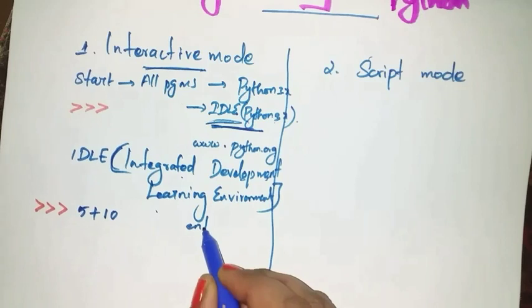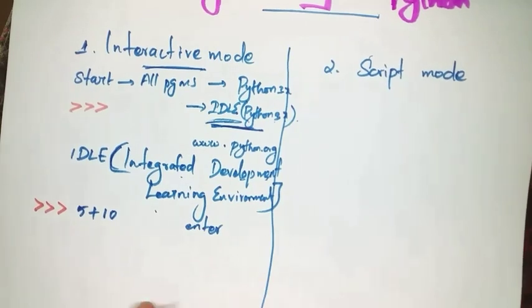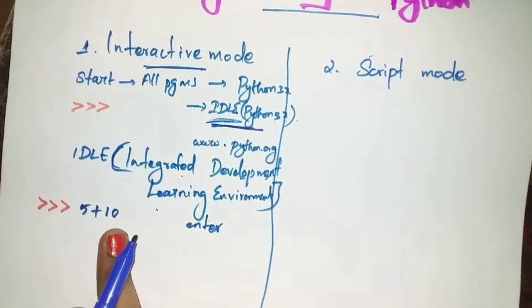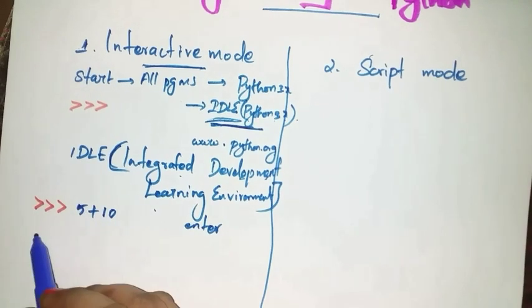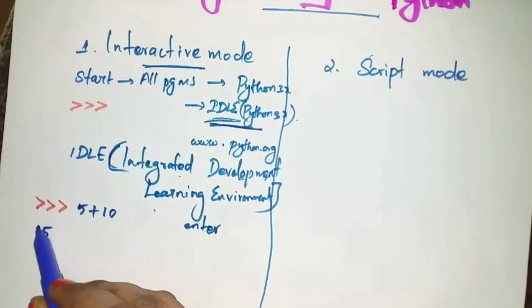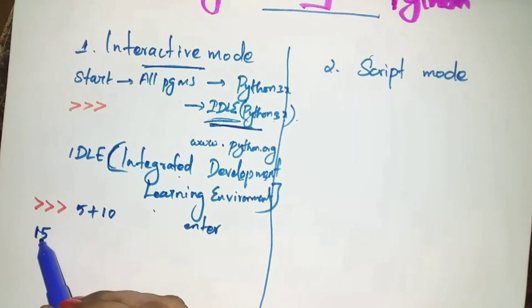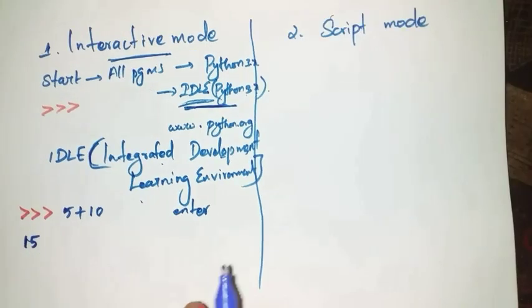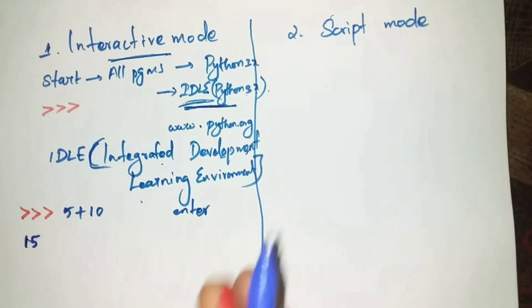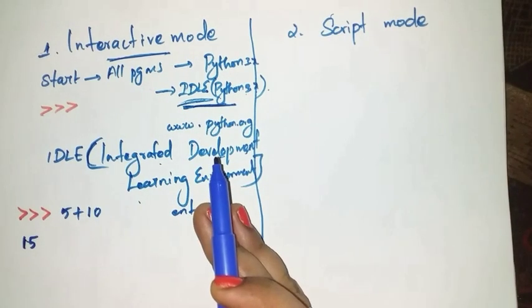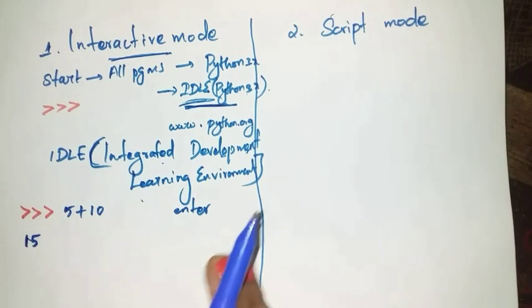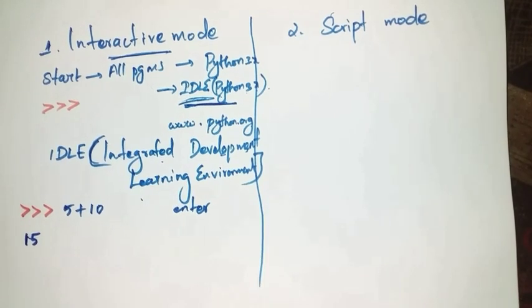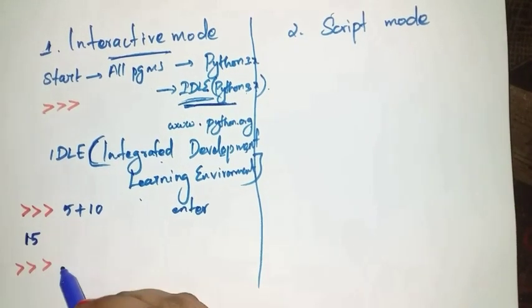After pressing Enter, it displays the result immediately on the next line. 5 + 10 gives 15. It displays results immediately on the next line. If you want to get immediate results, you can use this interactive mode. You can think of interactive mode as a simple calculator.